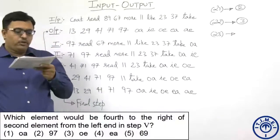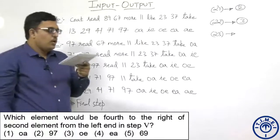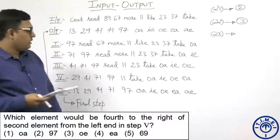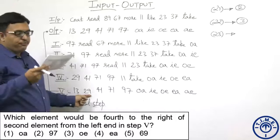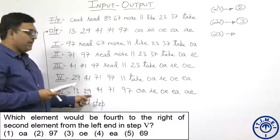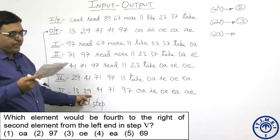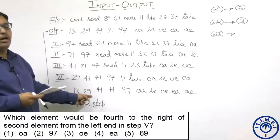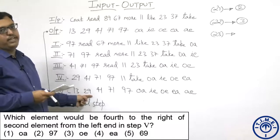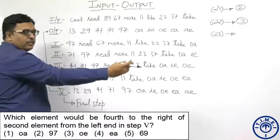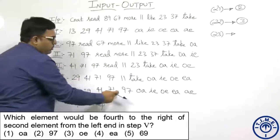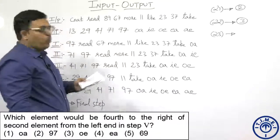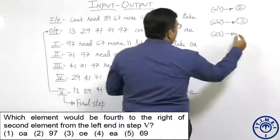Which element would be 4th to the right of the 2nd element from the left end in step 5? From the left end in step 5, the 2nd element is 29. Then 4th to the right of 29: 1, 2, 3, 4. The 4th element is OA, and it is given in option number 1.